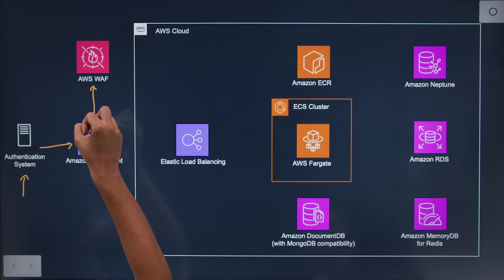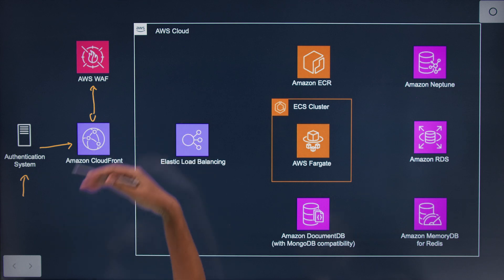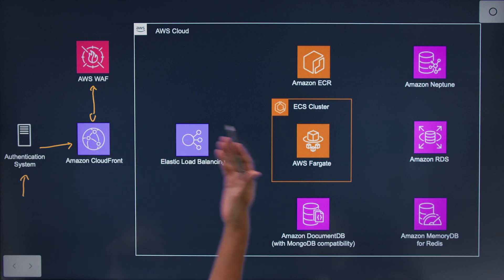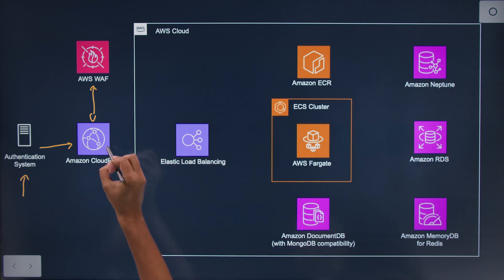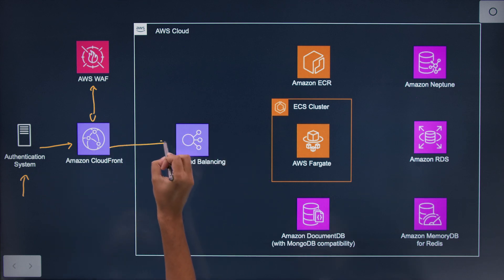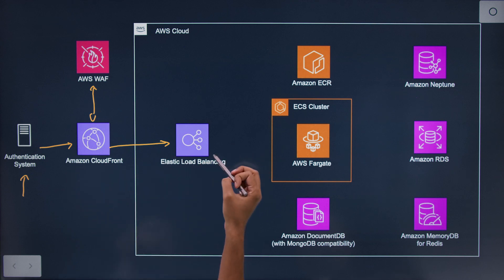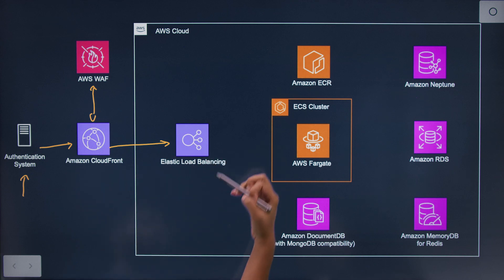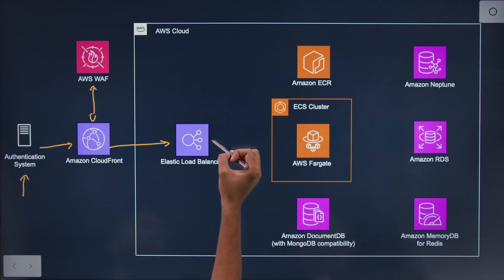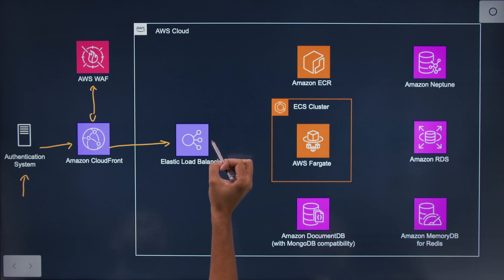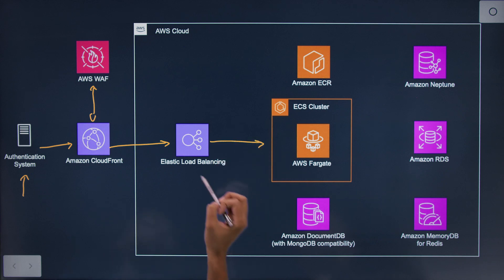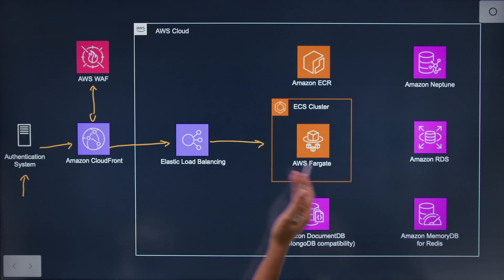AWS WAF helps us be secure against many common vulnerabilities. From CloudFront, the requests are routed to our load balancer that helps us keep up with the scalability aspects, which goes all the way to our ECS cluster.